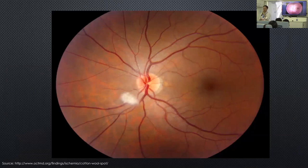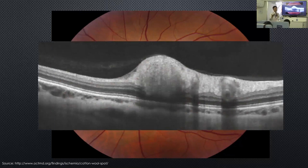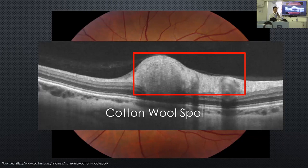What is this? — a cotton wool spot. It affects the nerve fiber layer but over a very large area. It causes a shadow underneath, blocking the light from coming through — so the light can't penetrate that whitish area. A cotton wool spot is the swelling of nerve material that gets disrupted.